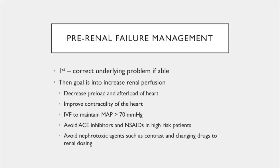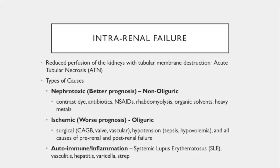Intrarenal failure is pathologically and anatomically inside the kidney, involving reduced perfusion with tubular membrane destruction — called acute tubular necrosis. Nephrotoxic causes have a better prognosis and are typically non-oliguric. Nephrotoxic agents include contrast dye, antibiotics, NSAIDs, rhabdomyolysis (muscle breakdown hitting membranes with lots of protein), organic solvents such as ethanol ingestion, and heavy metals. The worst prognosis for intrarenal failure is ischemia — insufficient blood flow leads to cell death and acute tubular necrosis.